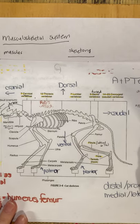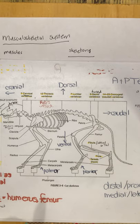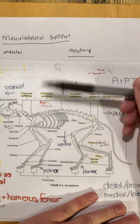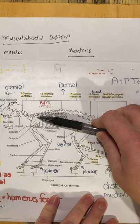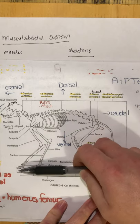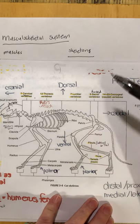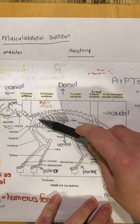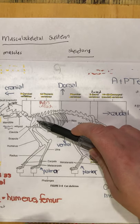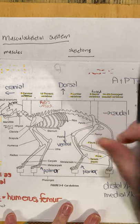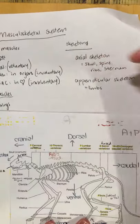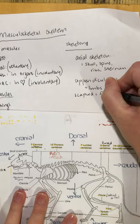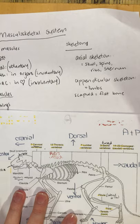We've gone through our axial skeleton. Now I'm going to go through the appendicular skeleton, starting with the forelimb and going from proximal to distal. Our very first bone is the scapula — the shoulder blade. The scapula is a flat bone.